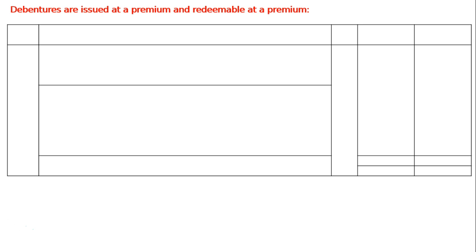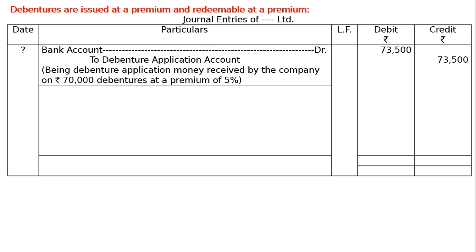The first journal entry, after drawing the format: Bank Account debited to Debenture Application Account. The amount is 70,000 plus 5% premium of 3,500, so we will be getting application money of 70,000 plus 3,500, which equals 73,500.